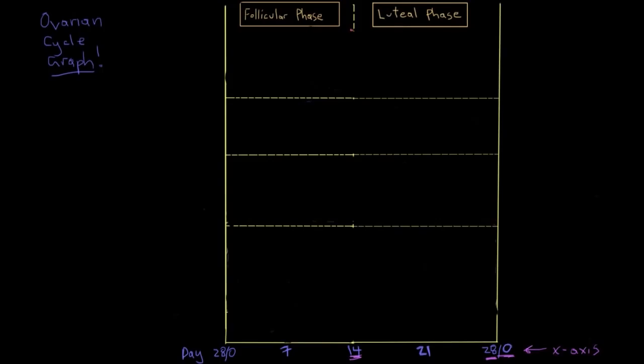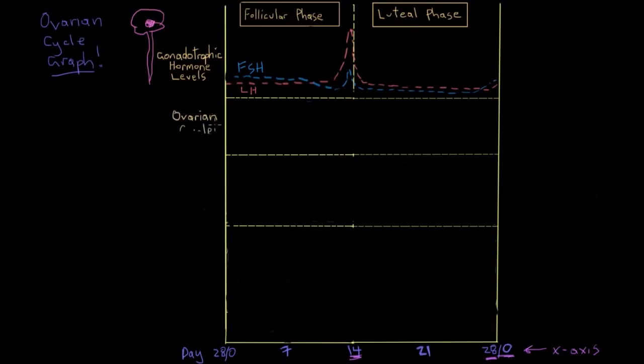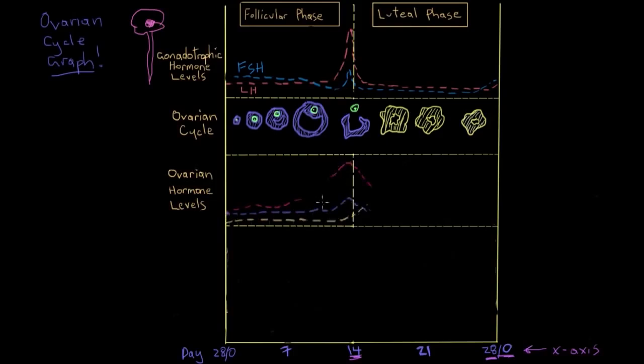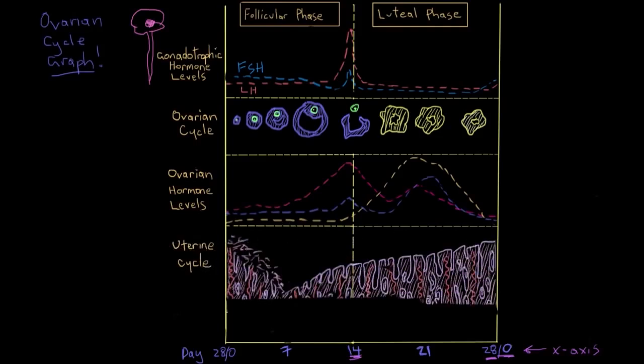They're even listed in a sort of order on this graph. So first, at the top, we've got the gonadotrophic hormone levels, FSH and LH. And remember, these are released from the anterior pituitary gland in the brain. And these hormones affect the development of follicles in the ovarian cycle. We'll look at the ovarian cycle just below here. And as the follicles develop, they cause the release of hormones from the ovaries. So the hormone levels are here below. And last, we have stages of the uterine cycle, which are influenced by the levels of sex hormones released from the ovaries.